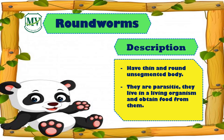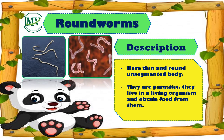Next are the roundworms. They have thin, round, and unsegmented bodies, like hookworms and pinworms. They are parasitic in nature — they live in a living organism and obtain food from them.